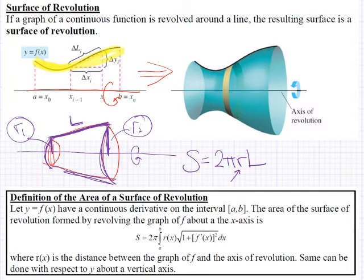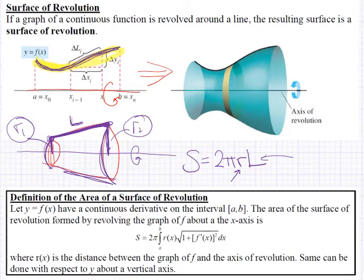So add those two radii together and divide by 2 — that's your average radius. That should sound familiar from what we just did previously with the shell method. L is the distance of this line from one end to the other. There are two points on this line, so you can find that distance. The only real difference between the cone and our curve is that this is not a straight line — it's a curved measurement with a curve to it.